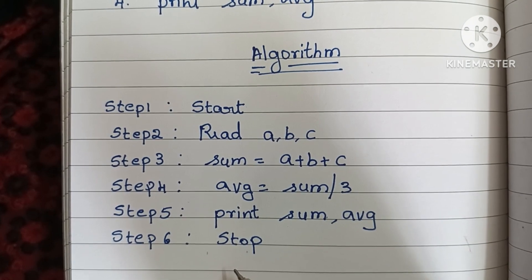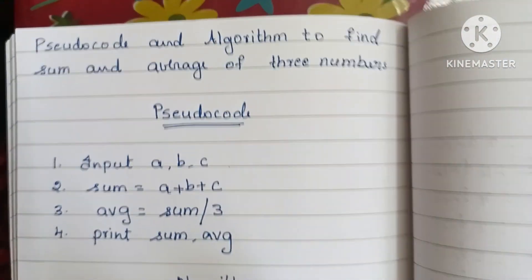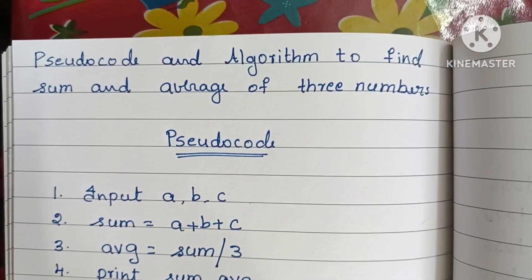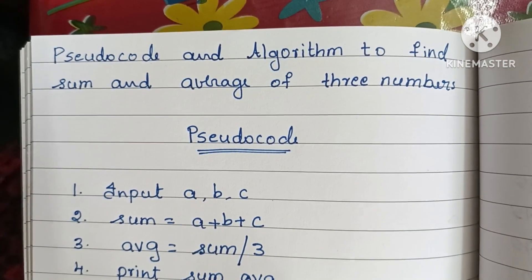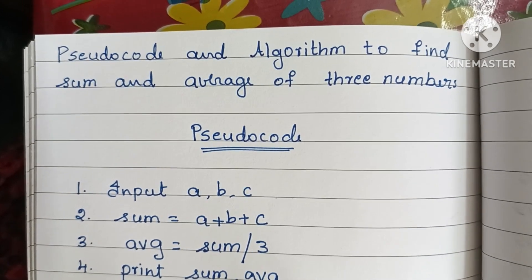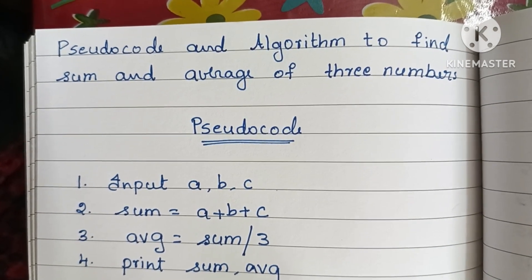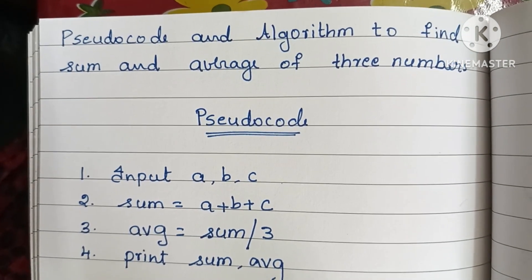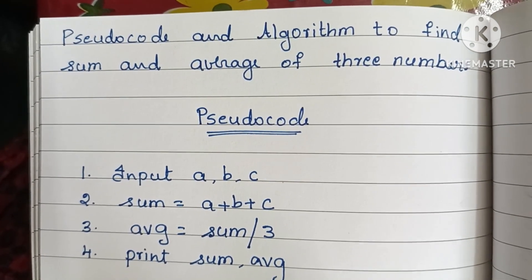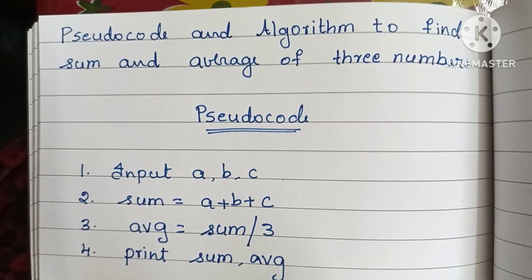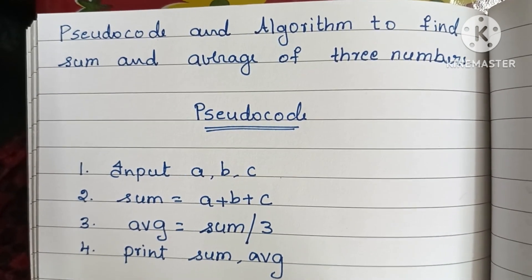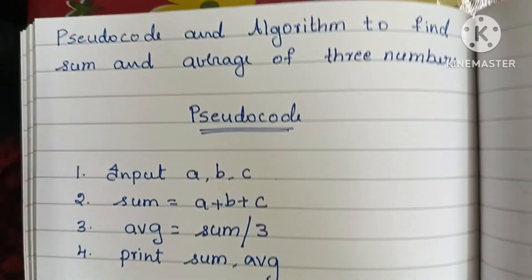Step 6: Stop. So guys, this is the pseudocode and algorithm to find sum and average of three numbers. Thank you for watching — if you like my video, please like and subscribe to my channel. All the best!